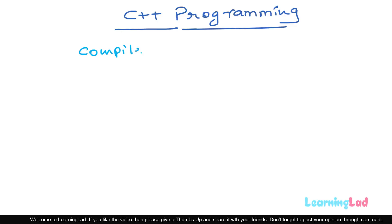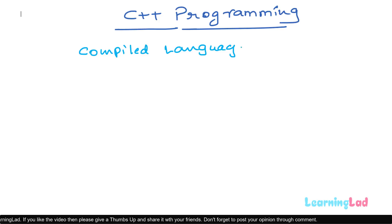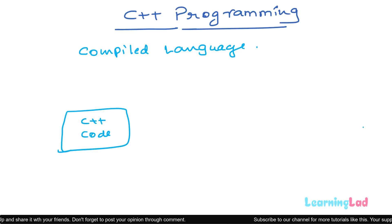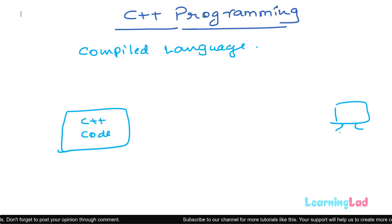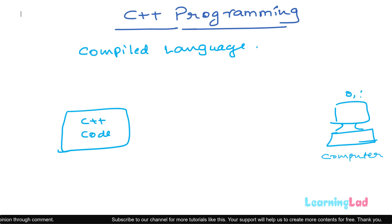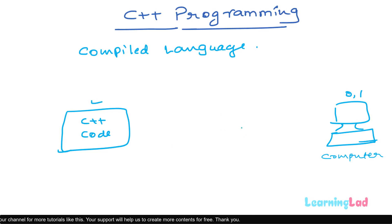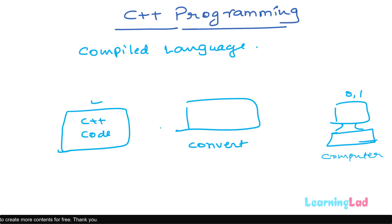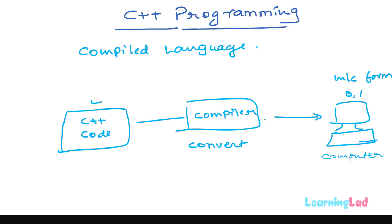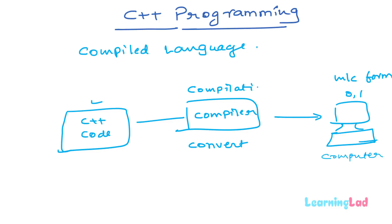The next term is compiled language. The code written using C++ is much closer to human readable format, so we can easily read and understand it. But computers can only understand code written in the form of zeros and ones — the machine code. So first we write the program in C++, then we convert that code to machine level form using a compiler. This process of converting the code using the compiler is called the compilation method, and since C++ uses this method, it is called a compiled language.